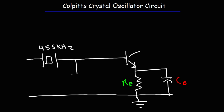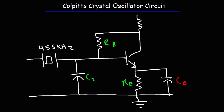Between the base of the transistor and ground, we're going to have a capacitor. Let's call this capacitor C2. We're going to have the base resistor RB, and I'm not going to connect that to VCC. Instead, the base resistor is going to be connected to the collector of the transistor and RC as well. RC is going to be connected to VCC, the collector supply voltage.